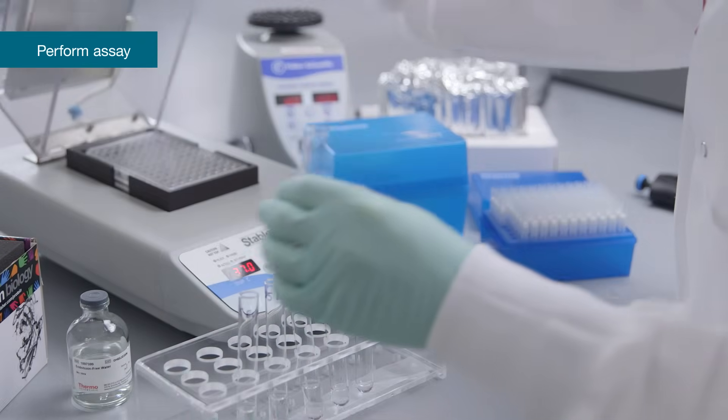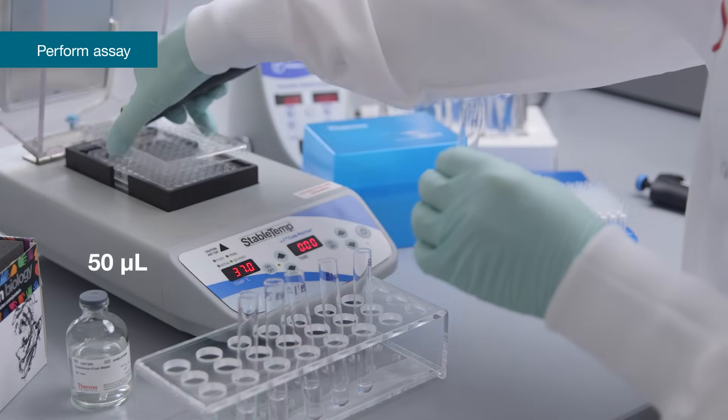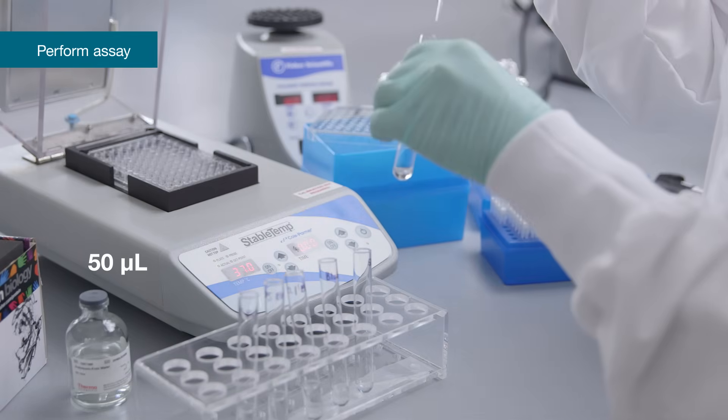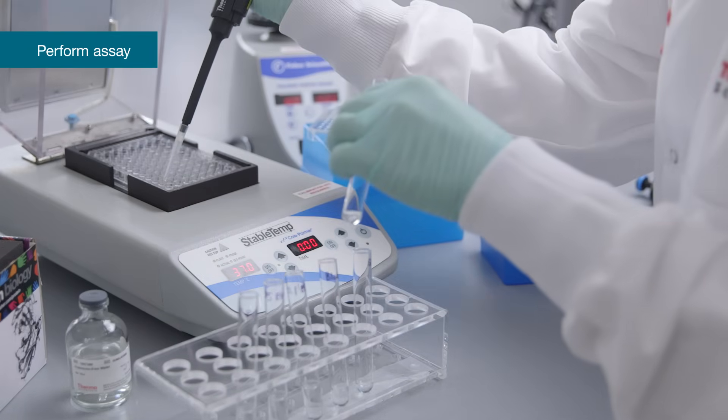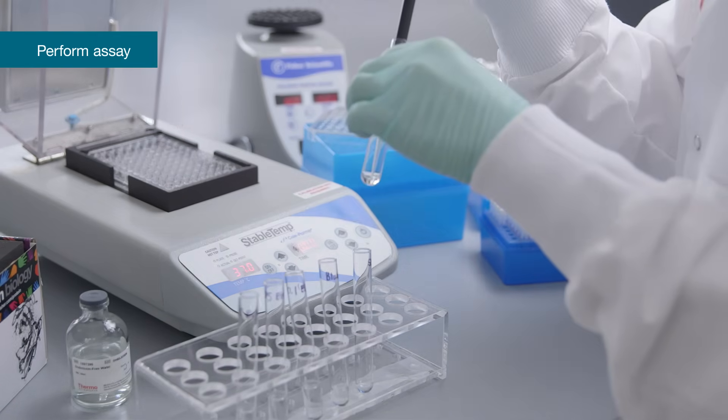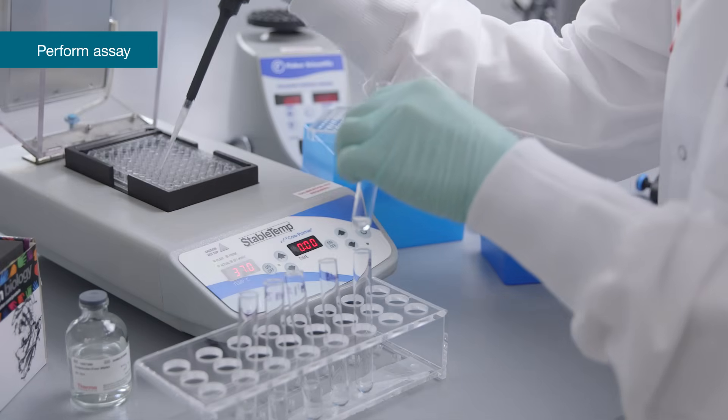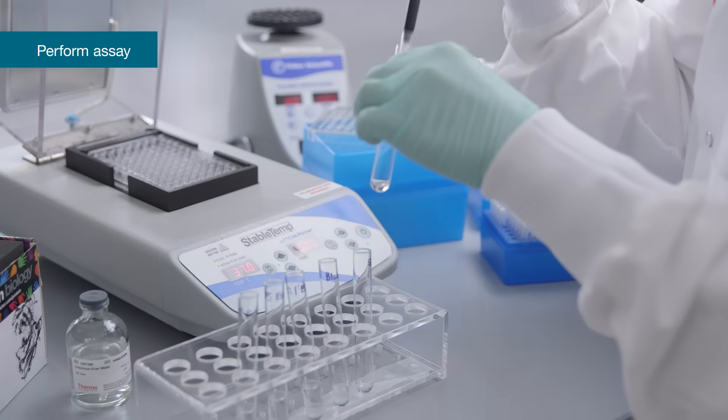Add 50 microliters of endotoxin standard dilutions, blank and samples per well in triplicate. Ensure pipetting order and rate of reagent addition remain consistent from well to well and row to row throughout the procedure.